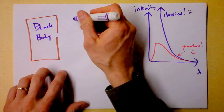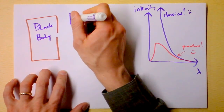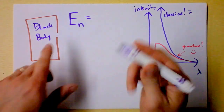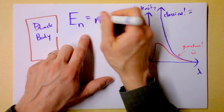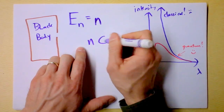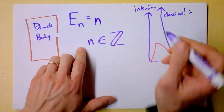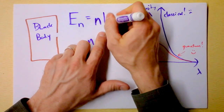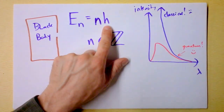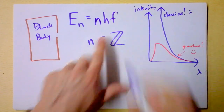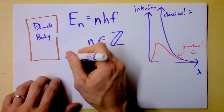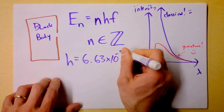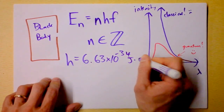Planck settled this by saying that the energy of some nth oscillation is this quantum number — really just an index, some integer. It can be any positive integer, and it's going to be multiplied by Planck's constant and the frequency. Planck's constant, this H, is an incredibly small number: 6.63 times 10 to the negative 34th joule-seconds.